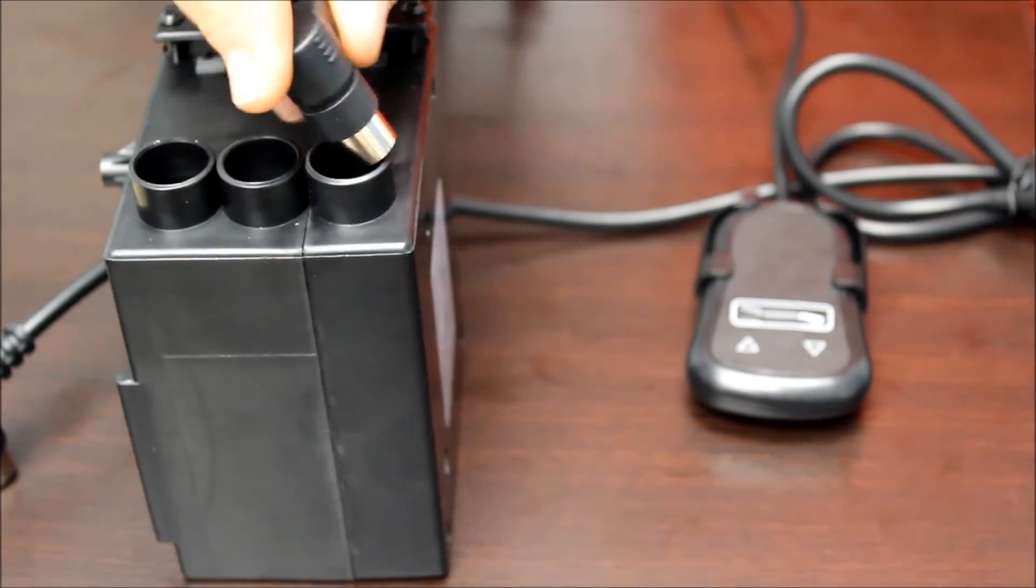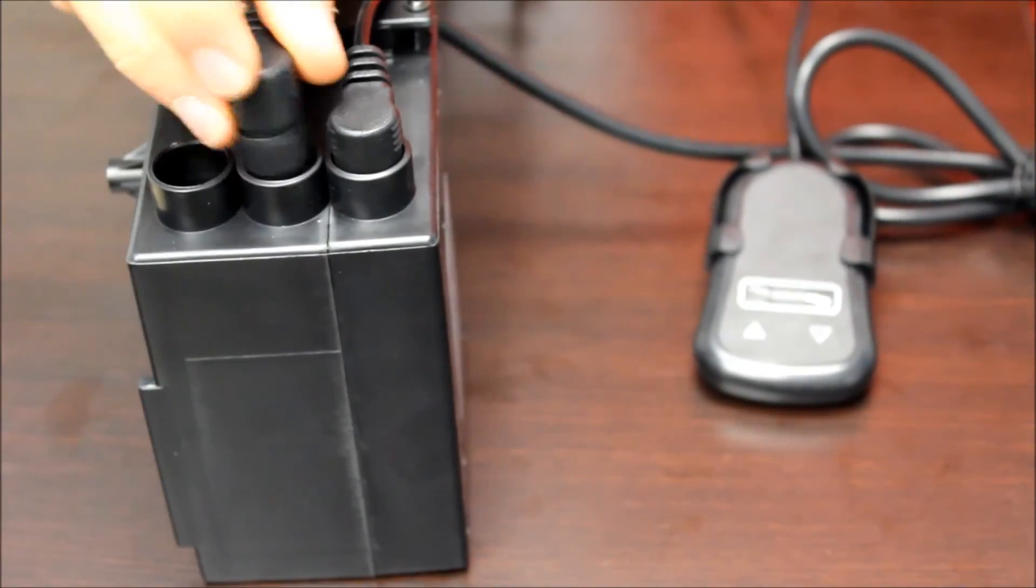The control box has one plug for the hand remote, and then the other plug is for the actuator.